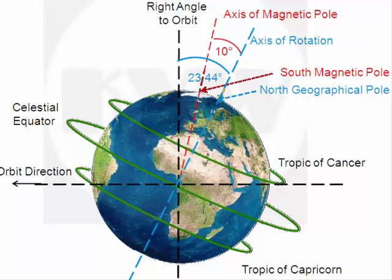New shocking evidence points to a pole shift which, if it happens fast, will cause chaos around the world.